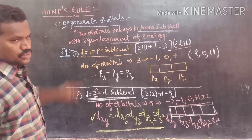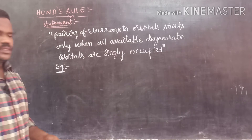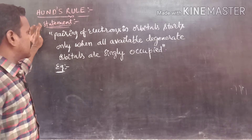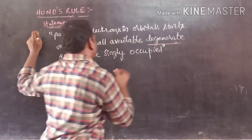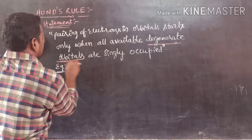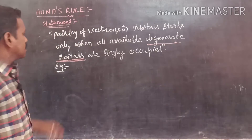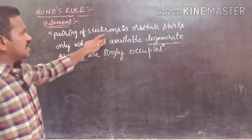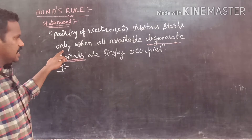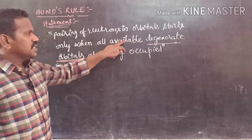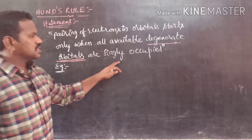Now let us see the statement of Hund's rule, which depends upon degenerate orbitals. The statement is: pairing of electrons in the orbitals starts only when all the available degenerate orbitals are singly occupied.